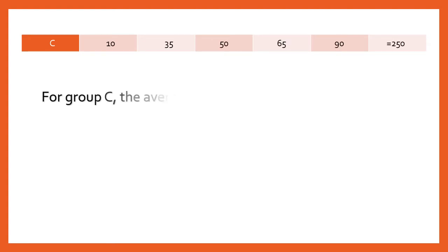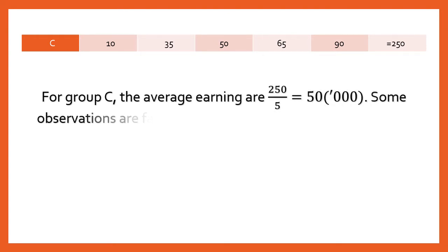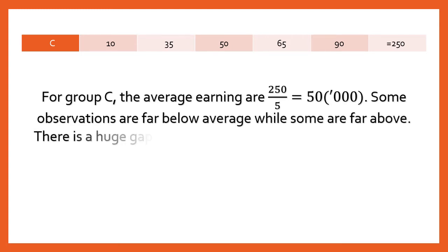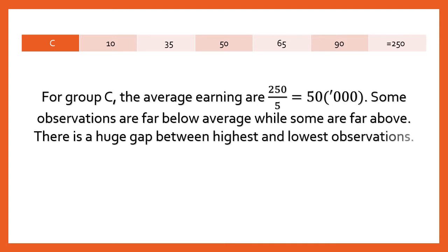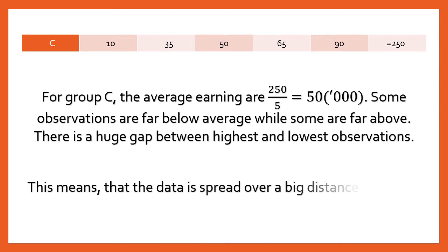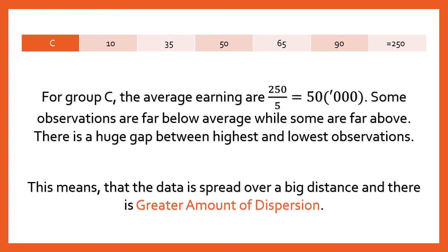We can't say the same for Group C. Its average is also 50,000, but some observations are very far below and some are far above the average. There is a huge gap between the highest and lowest observations — the data is spread over a big distance, so there is a greater amount of dispersion. From these three examples, you can grasp the concept of dispersion.